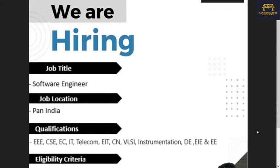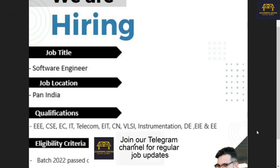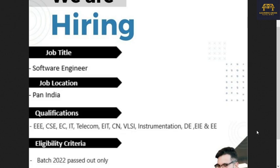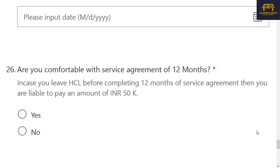The first one is a software engineer Pan India hiring. The qualification mentioned is only the 2022 batch — branches like EEE, CSE, ECE, IT, Telecommunications, EIT, CN, VLSI, Instrumentation, EE, and E&I can apply. The percentage criteria is 70% throughout academics — in 10th, 12th, and UG. So this is only for 2022 batch IT, CSE, and circuit branches.